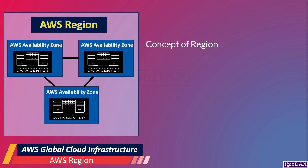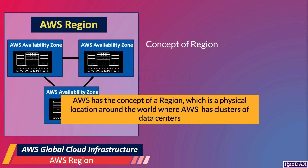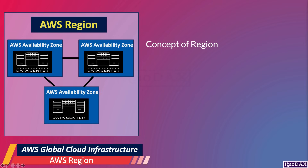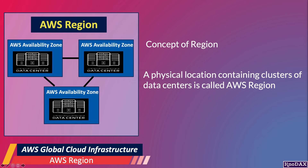What is the AWS Region? AWS has the concept of a region, which is a physical location around the world where AWS has clusters of data centers. In other words, an AWS region is a physical location with clusters of data centers.